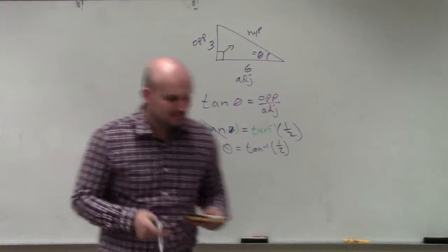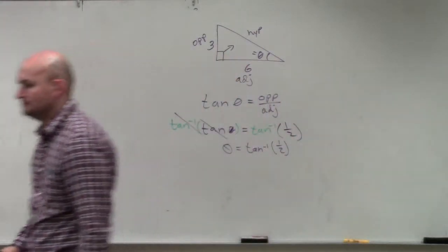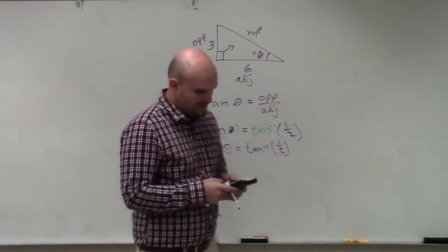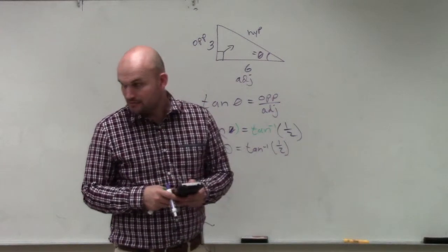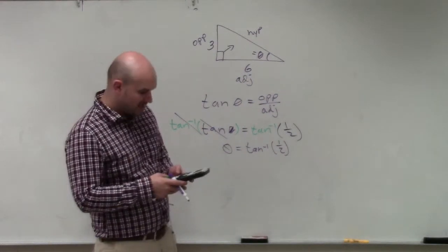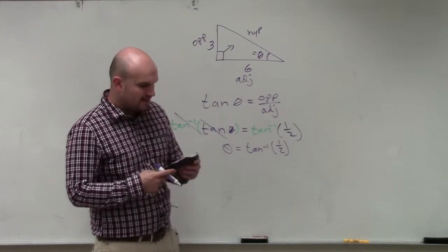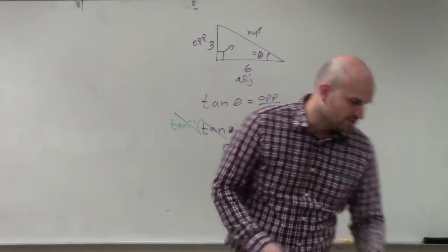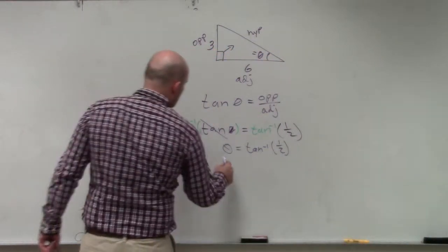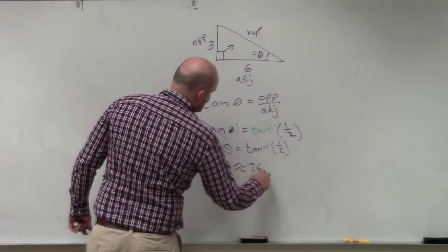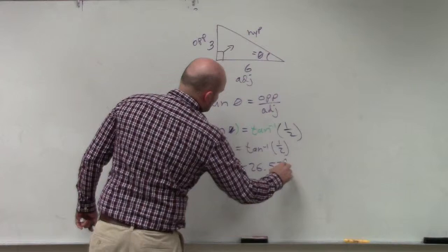And then when you type that in, I'll use Mateo's. You in the right degree? You didn't even change your degree yet. What's wrong with you? So you do the second tangent of 1/2, and I get 26.565. I'm going to round it to the tenth, which will be 26.57. So theta is approximately 26.57 degrees.